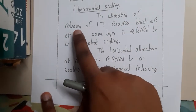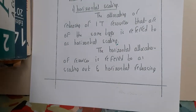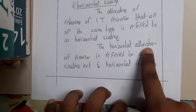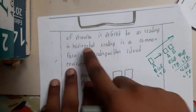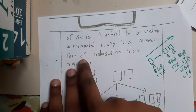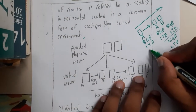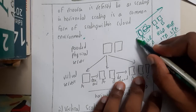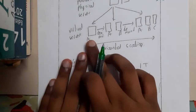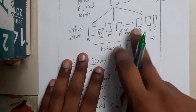The allocation or releasing of IT resources of the same type is referred to as horizontal scaling. Horizontal allocation of resources is called scaling out, and horizontal releasing of resources is called scaling in. So basically, you add more virtual systems — combining A and B, then A, B, and C — scaling out on demand in that way.